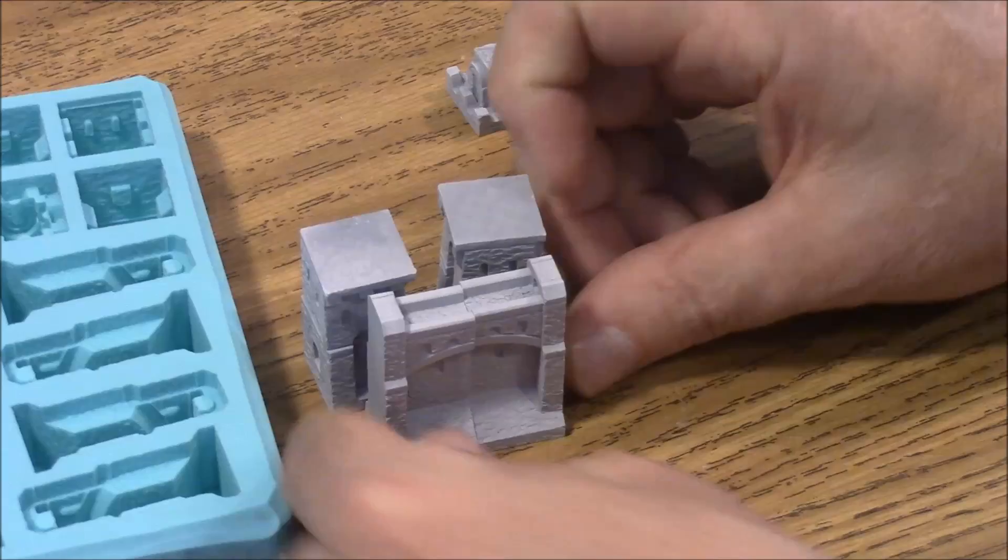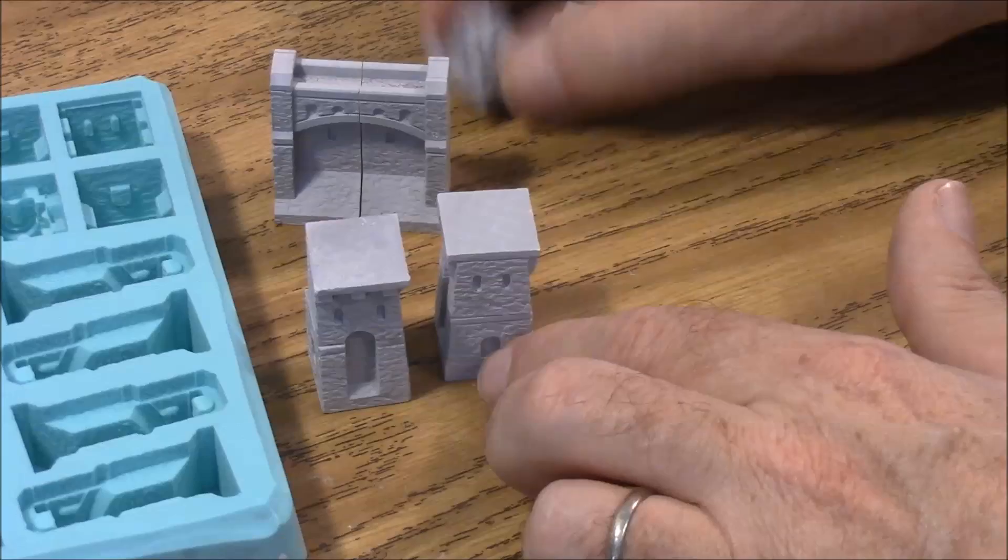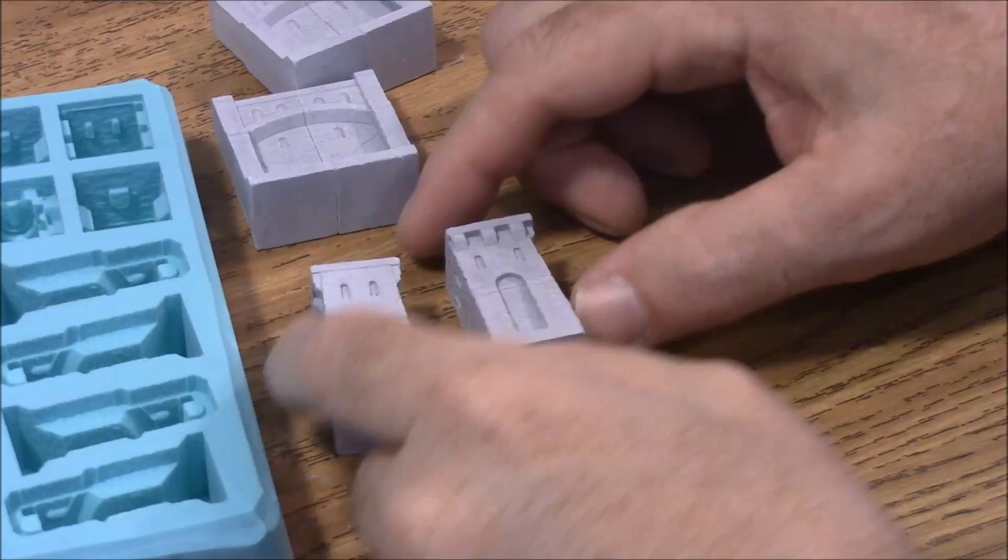The castle walls, which are these two pieces, basically just butt together like this to make a complete castle wall. And then once you get the towers assembled, we have the tower tops that go on top of both of the towers.